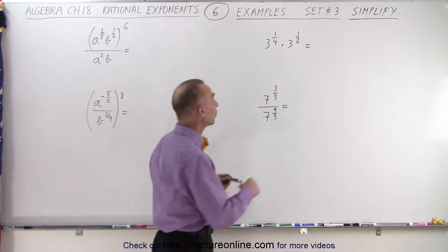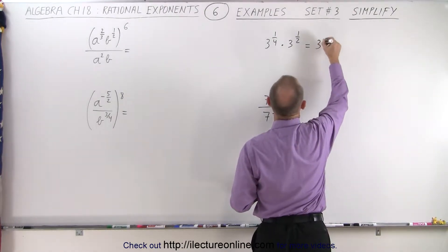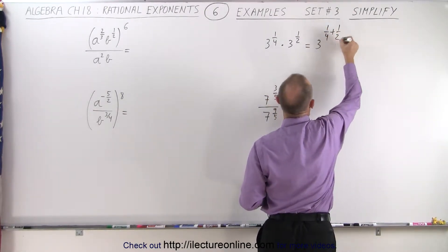In our first example, notice the bases are the same. So we can add the exponents when we multiply. So this becomes 3 to the 1/4 plus 1 1/2 power.